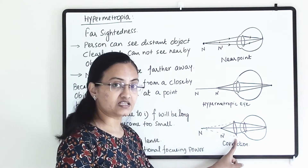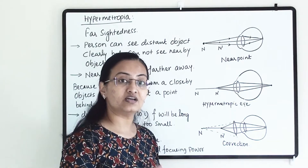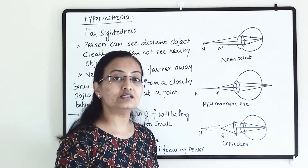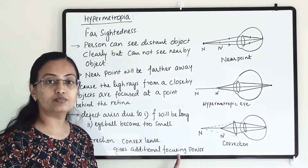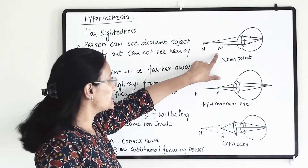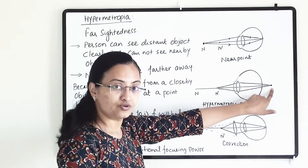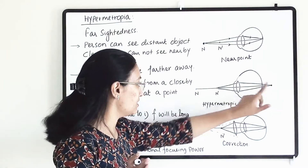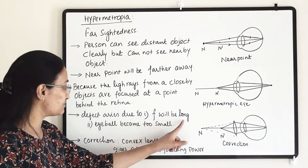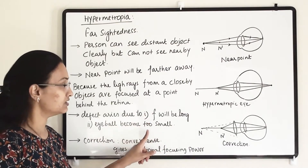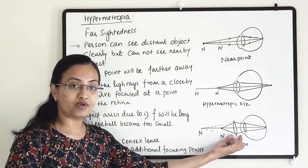Hypermetropia can be corrected with a convex lens. When using a suitable power of convex lens, we can shift the near point back to 25 cm, and the person will be able to read and see nearby objects clearly. The convex lens gives additional focusing power so the person can see nearby things. In the hypermetropic eye, the image forms behind the retina due to increased focal length or a too-small eyeball. Correction is done with a convex lens of suitable power.